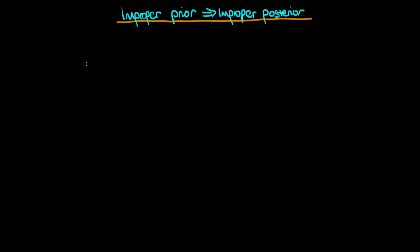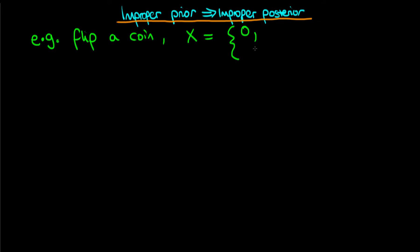In this video I want to provide an example of how using an improper prior — a prior that is not a valid probability distribution — can lead to an improper posterior. The example we're going to use to illustrate this is pretty simple. We're just going to imagine that we're flipping a coin, and we're going to use the random variable x to describe its outcome. If it lands tails up, x is equal to zero, and if it lands heads up, then x is equal to one.